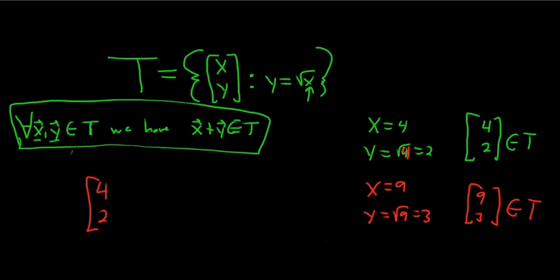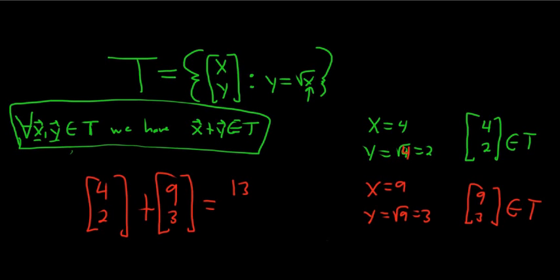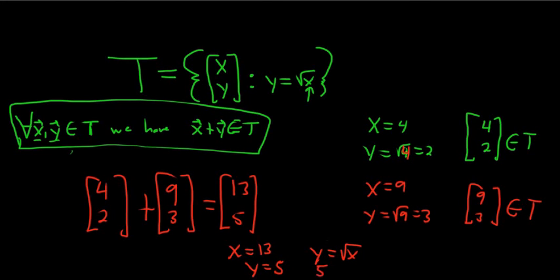So let's look at the sum. (4, 2) plus (9, 3) gives us 4 plus 9 is 13, and 2 plus 3 is 5. So the question is: is (13, 5) in T? Here x is 13 and y is 5. If this were in T, y would equal the square root of x, meaning 5 would equal the square root of 13. That's not true. So this cannot be in T. Because 5 is not equal to the square root of 13, that's how you show a set is not closed under vector addition — you come up with two vectors in the set and show their sum can't be in the set.